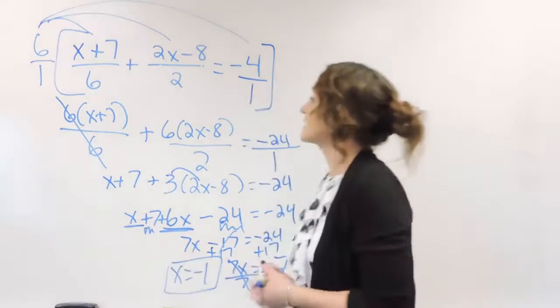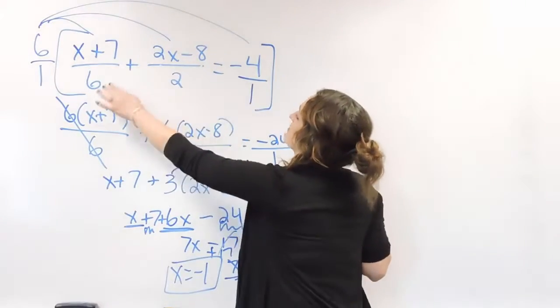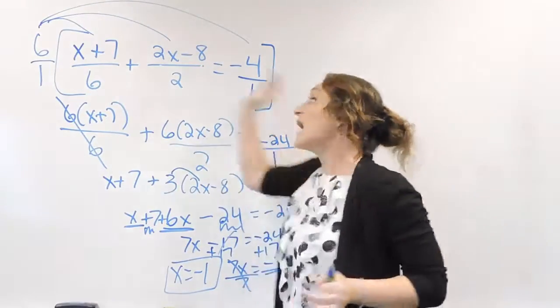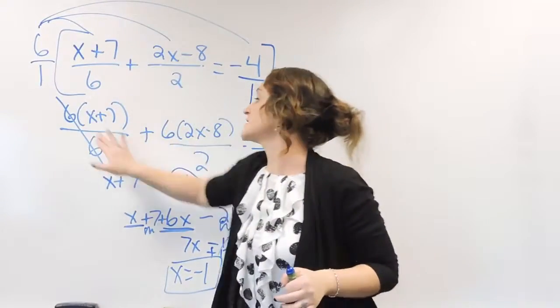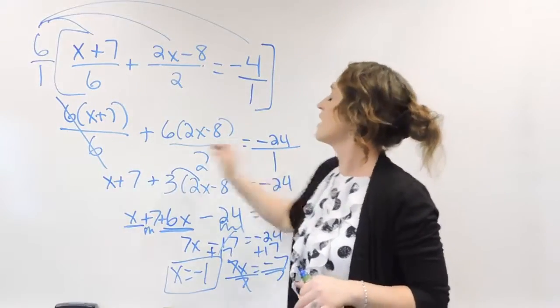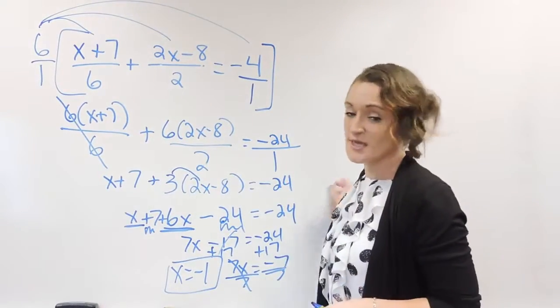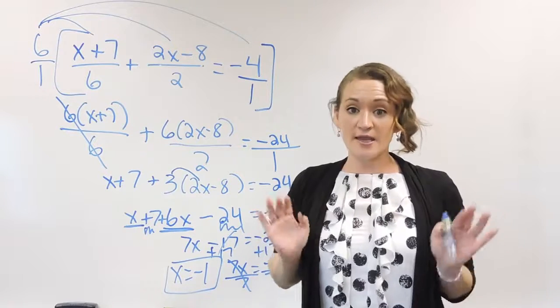Alright, so when it comes to clearing fractions, just multiply by the common denominator of everything, so that you can simplify these fractions here and be left with whole numbers to make the equation a lot easier to solve.